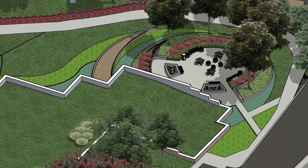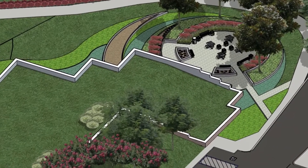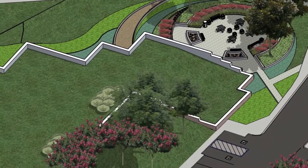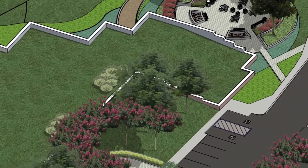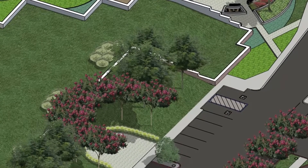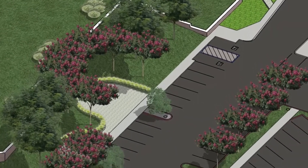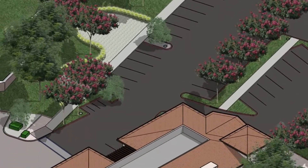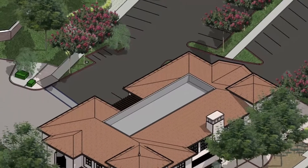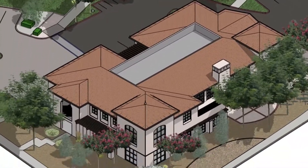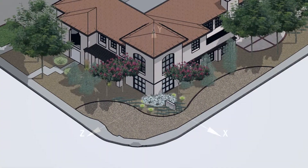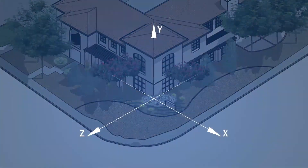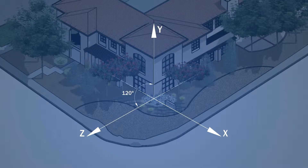An isometric projection is a graphic that lacks perspective where three-dimensional objects are shown in a two-dimensional format. This is a common presentation tool that allows you to easily convey the arrangement of objects in your plan. The rule for this projection is that the coordinate axes — the X, Y, and Z axes — should be set at a 120-degree angle from each other.